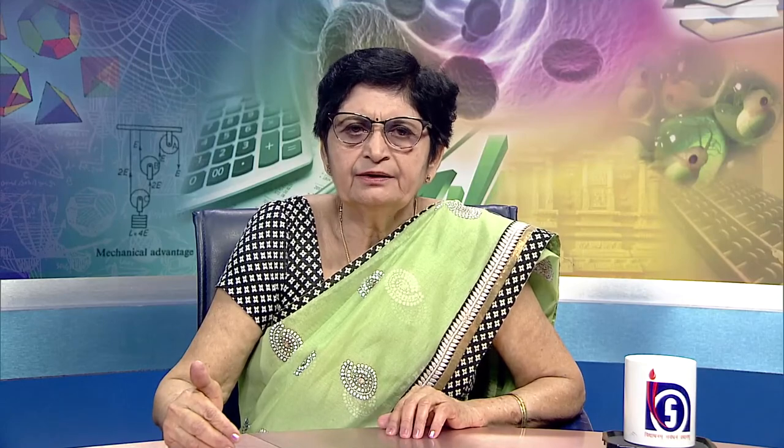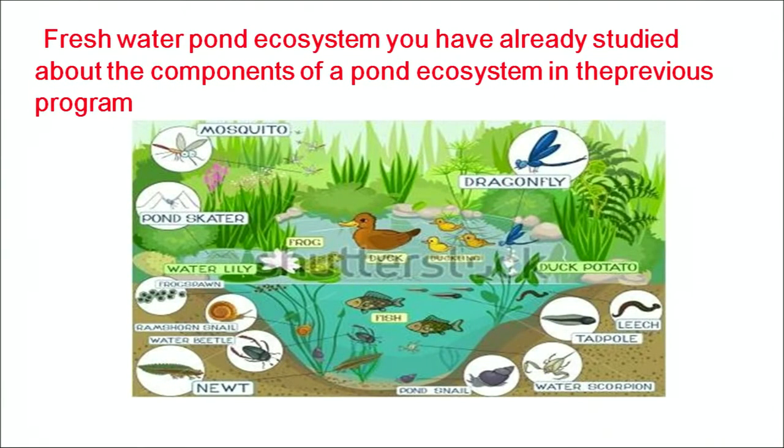There are three basic types of freshwater ecosystems: lentic, which are slow-moving water bodies including pools, ponds and lakes; lotic, which are fast-moving water bodies such as streams and rivers; and the third type, wetlands, which are areas where the soil is saturated with water or covered with water for at least part of the year. This picture shows an aquatic ecosystem of freshwater with its various components of fauna and flora.